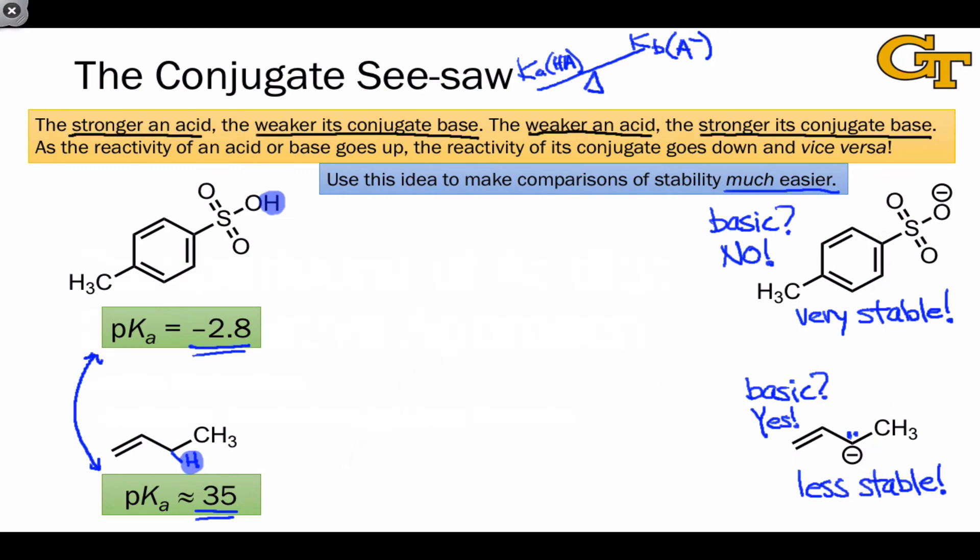This also suggests a quantitative approach to evaluating whether an acid-base reaction is favorable or not, in other words, whether at equilibrium we will have more products than reactants or not. We're going to formalize that process in the next video.